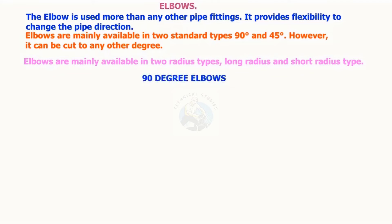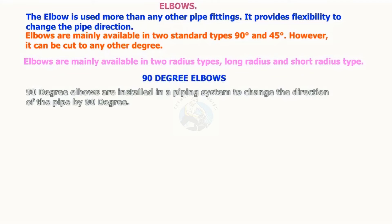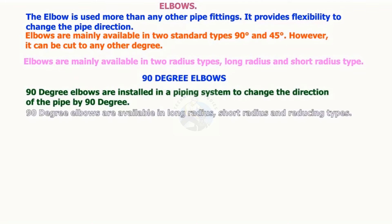90-degree elbows are installed in a piping system to change the direction of the pipe by 90 degrees. 90-degree elbows are available in long radius, short radius, and reducing types.